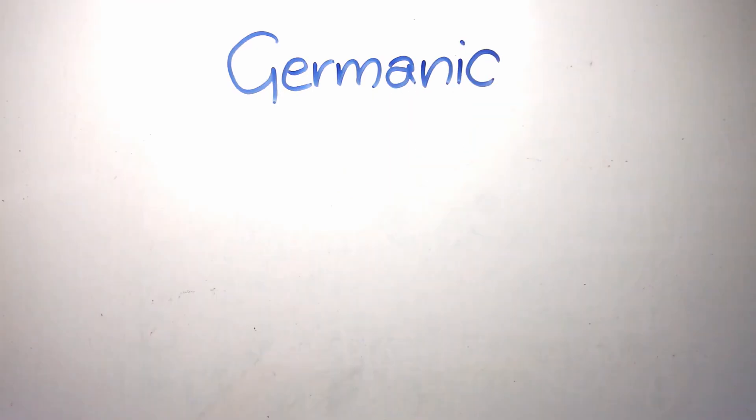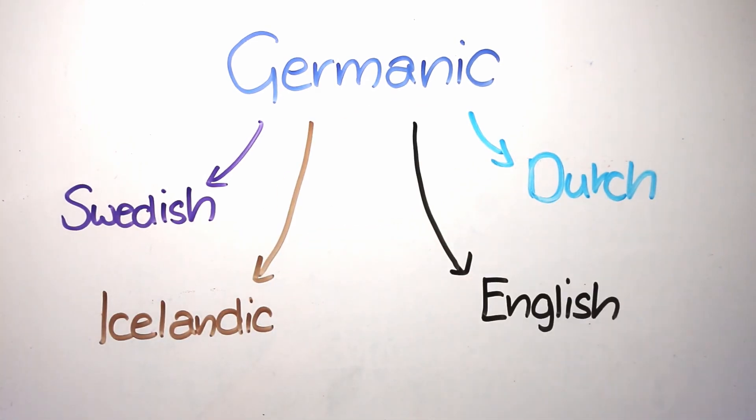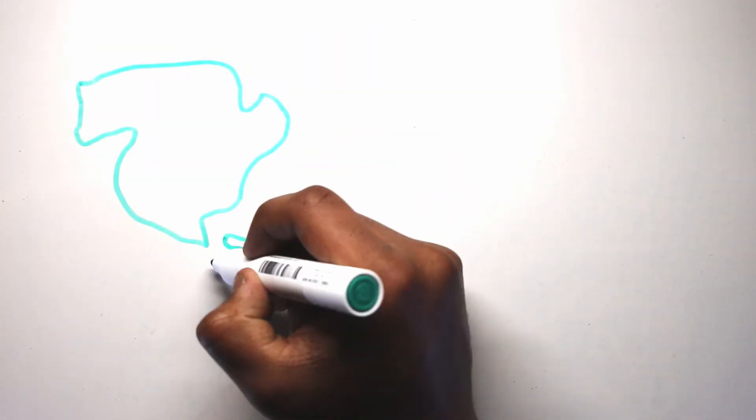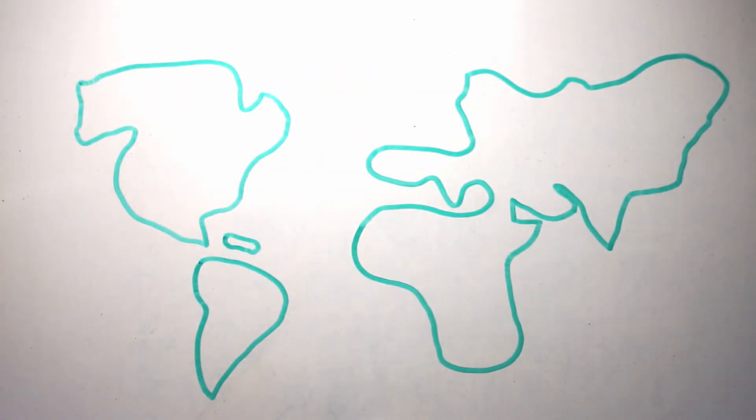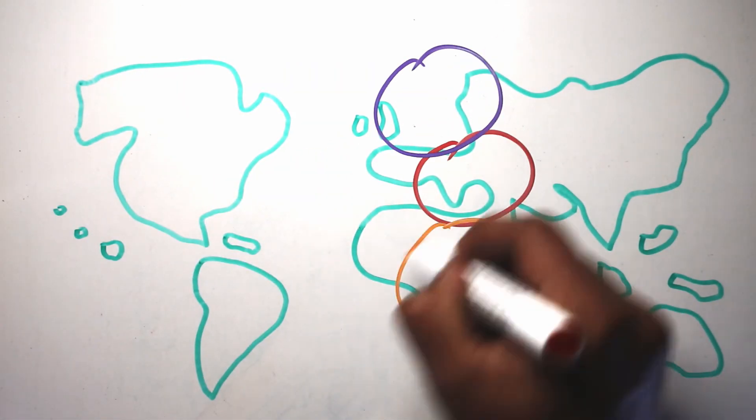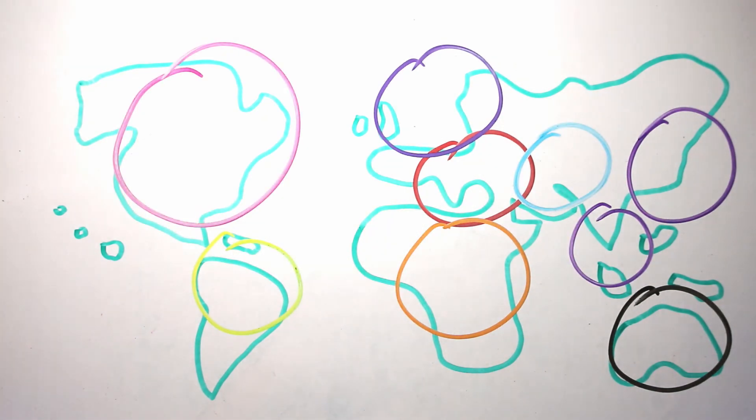In fact, it belongs to a different family called the Germanic language family, related to Dutch, Swedish, Icelandic, and of course, German. There are many such language families across the world, because as humans continue to migrate around the planet, languages continue to split and diverge.